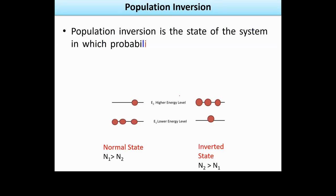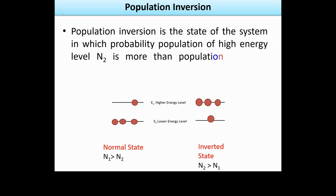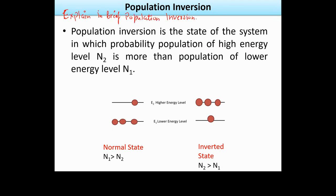The next question is: explain in brief population inversion. If we talk about any atom, normally the atoms are in the lower energy state. The number of atoms in the higher energy state is less. If we say there are N1 atoms in the lower energy state and N2 atoms in the higher energy state, normally N1 is greater than N2. This is known as the normal state.